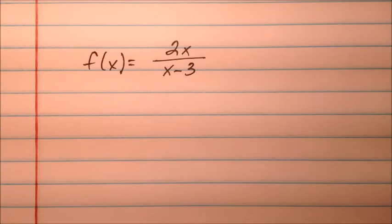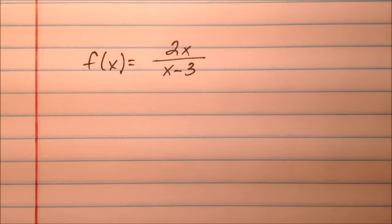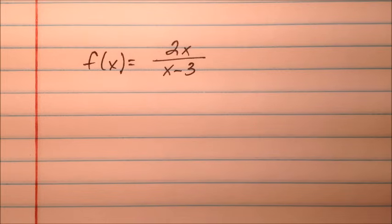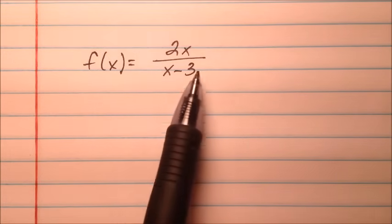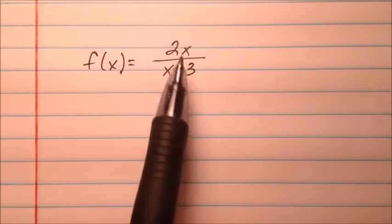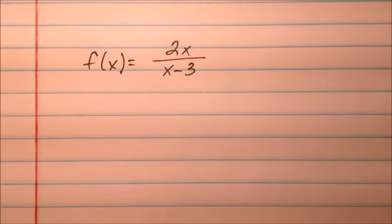In this video, I'm going to talk about horizontal and vertical asymptotes for rational functions. We're going to take a look at six examples, and each one of them is going to be different in its own way. The first one is f of x equals 2x over x minus 3.